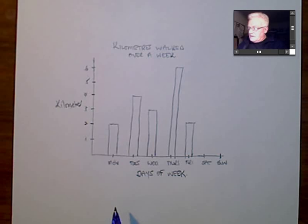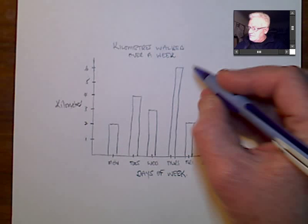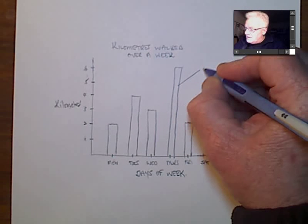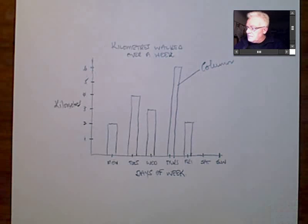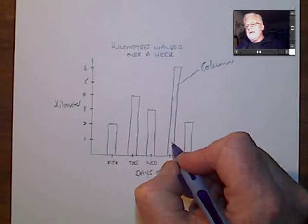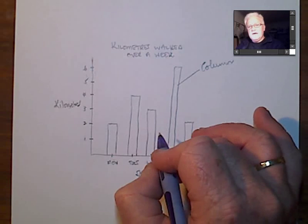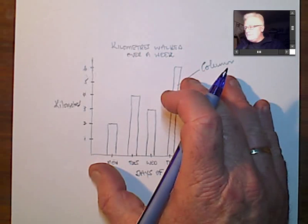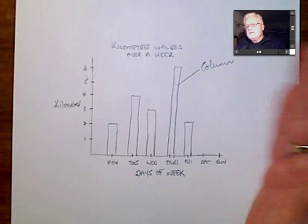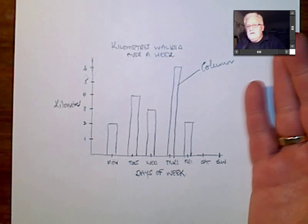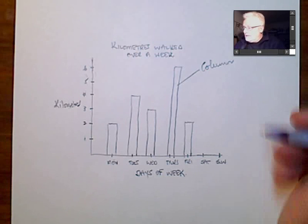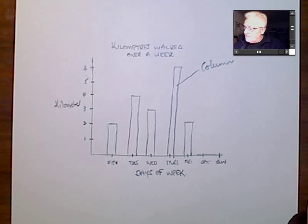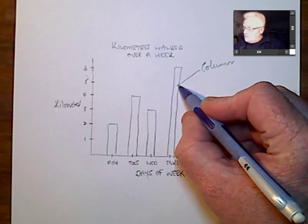Now what I need to actually indicate here also is the type of graph that we're particularly looking at here. So in this case here, I'm looking at a column graph. What I'm actually doing at the moment is I'm actually annotating the layout diagram, because then I can hand this particular diagram to another person who can actually create it in a spreadsheet or in any software that allows you to create such a graphical representation.